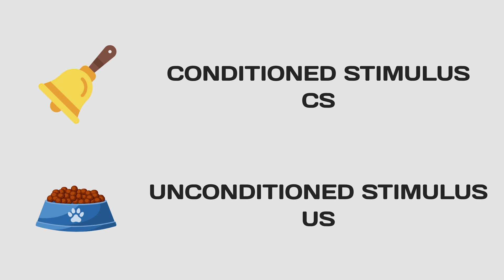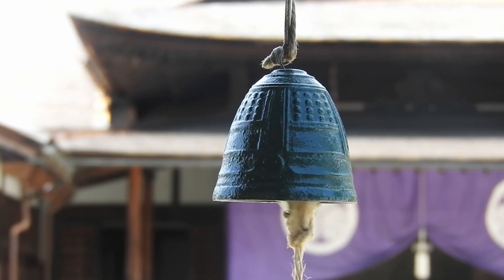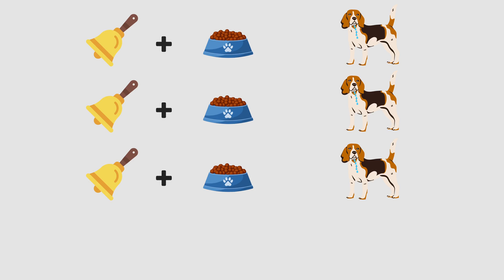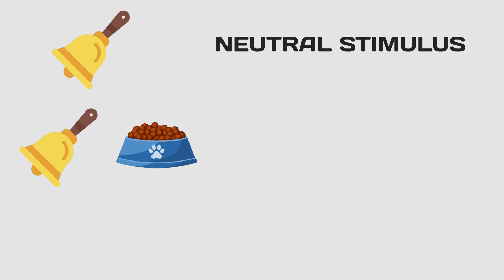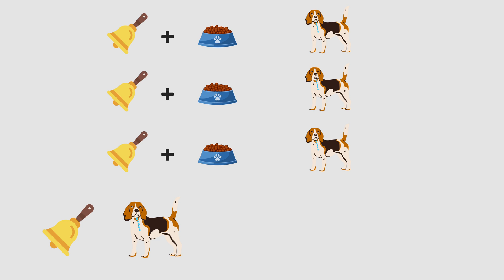Now, let's delve into the terminology. In Pavlov's experiment, two critical elements were at play: the bell, conditioned stimulus or CS, and the food, unconditioned stimulus or US. Initially, the bell was nothing special — a neutral sound. However, Pavlov introduced a systematic association. When the bell consistently preceded the presentation of food, the dogs began salivating at the mere sound of the bell. This transformation marked the bell's transition from neutral stimulus to a conditioned stimulus, or CS.